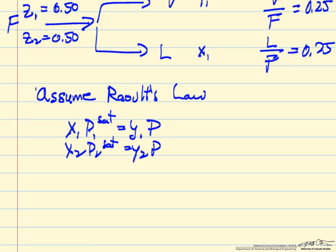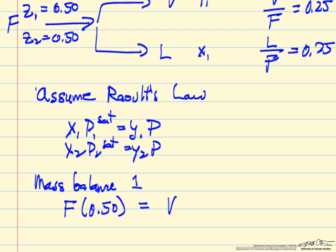So for example, if we do a mass balance on component 1, let's say we have so many moles coming in, and the number of moles that are component 1 is half of that because of the mole fraction. Then we have so many moles of vapor leaving.